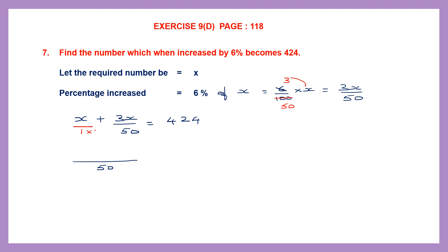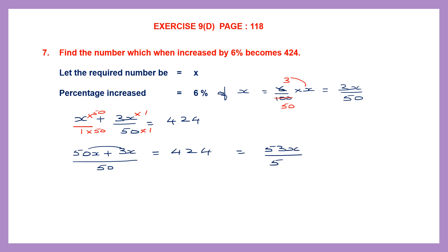1 into 50 is 50, so multiply x by 50 to get 50x. Then for the next fraction, the denominator is 50, so 3x × 1 is 3x. Together this gives us 424, meaning 50x + 3x = 53x. So 53x/50 = 424.